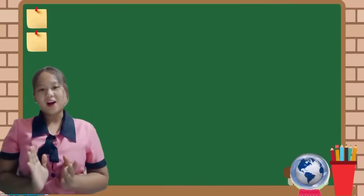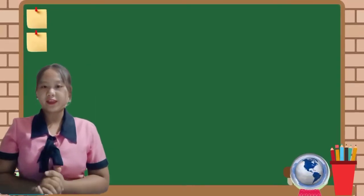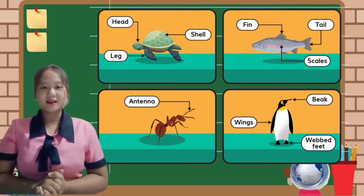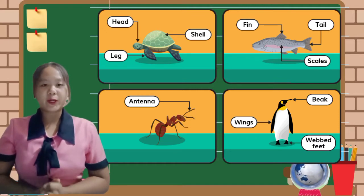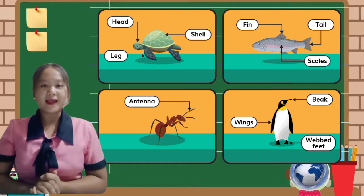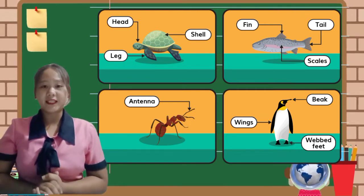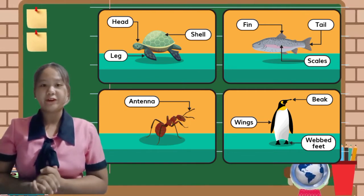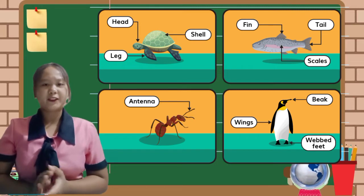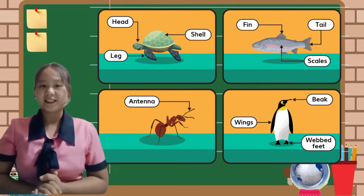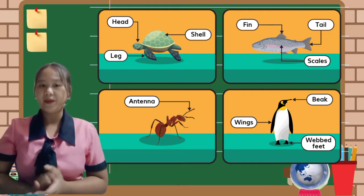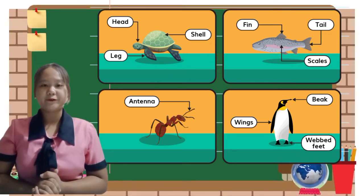Now let's proceed to another set of pictures. There's a turtle with a head, a shell, and legs. We can also see a fish with a fin, a tail, and its scales. There is also an ant with its antenna. And the last one is a penguin with a beak, wings, and its webbed feet.